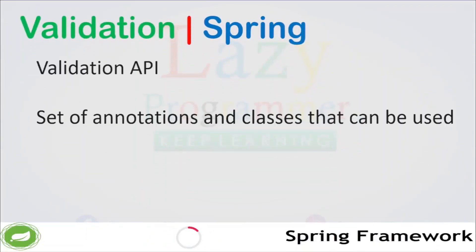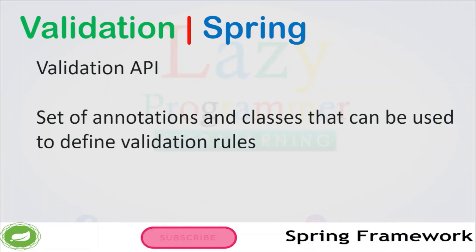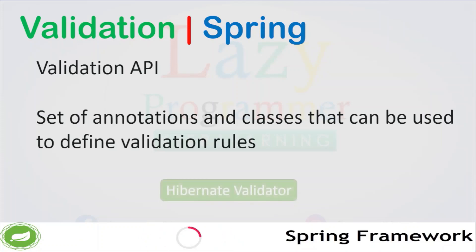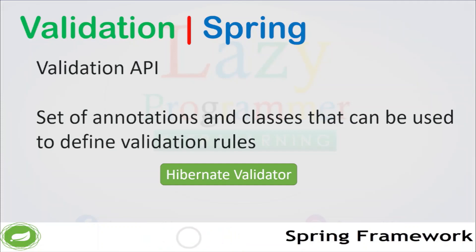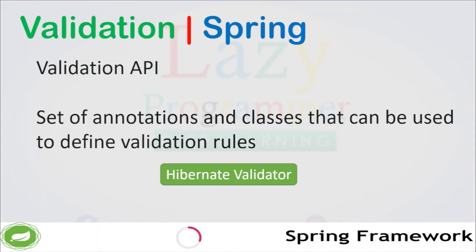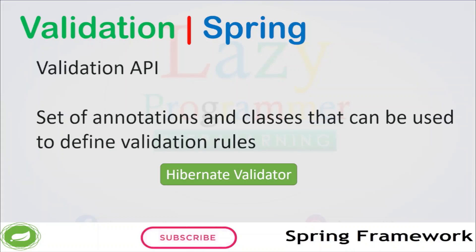To perform validation in a Spring application we can use the validation API, which provides a set of annotations that we will see in our hands-on session. For the implementation part we can use Hibernate's implementation of the validator. For that we just need to add one dependency in pom.xml if you are using Maven, or in build.gradle if you are using Gradle as a build tool. We will have a detailed session on Maven and dependency management when we discuss Spring Boot projects in upcoming sessions.